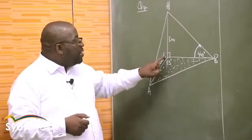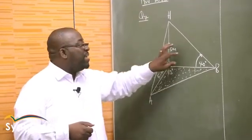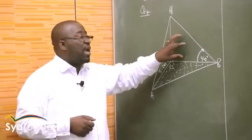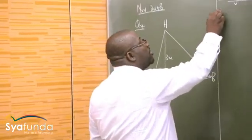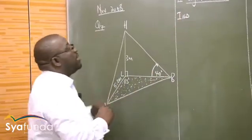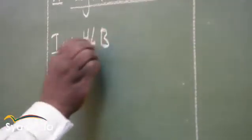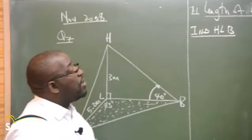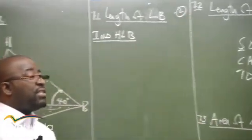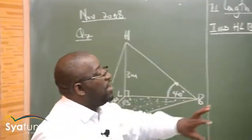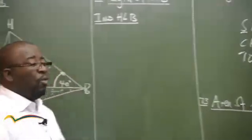LB is in this triangle, but it's also in this triangle. You can also find LB using this triangle because it is easier to use the right angle triangle. I'm going to solve in triangle HLB — that's the triangle I'm going to use. To give you more hints, look at the marks for this one — it's two marks. The other two are four.